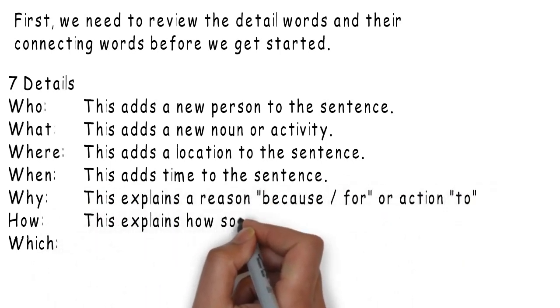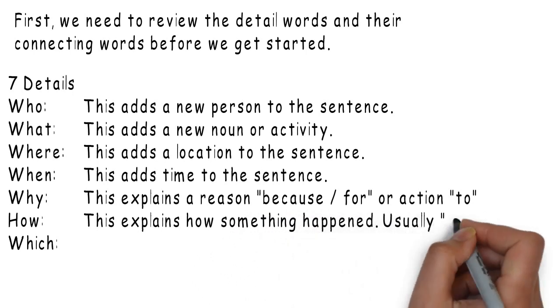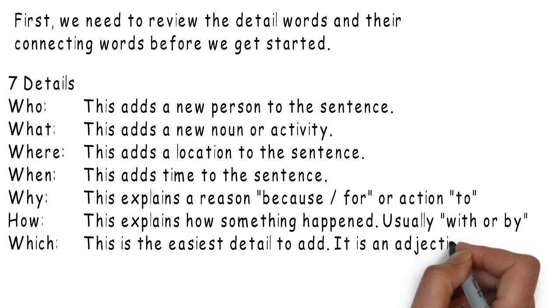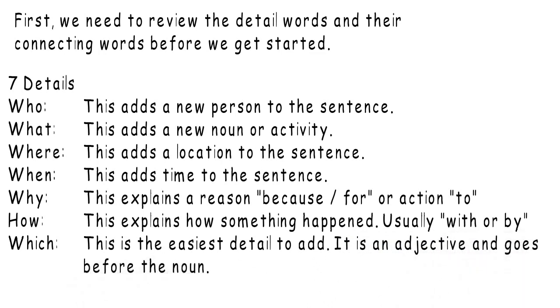Why – this explains a reason, because or for, or an action, to. How – this explains how something happened, usually with or by. Which – this is the easiest detail to add. It is an adjective and goes before the noun.